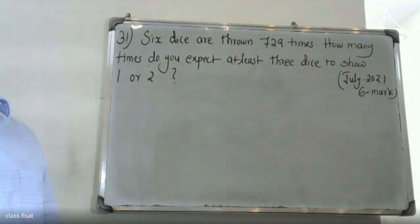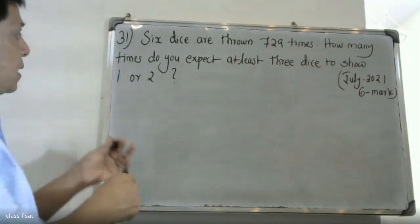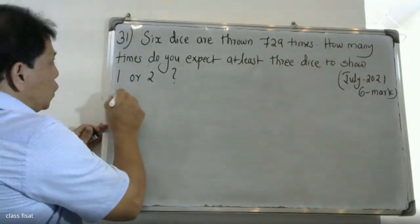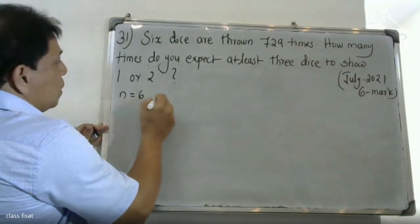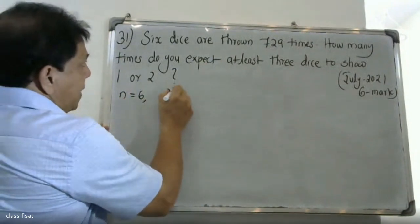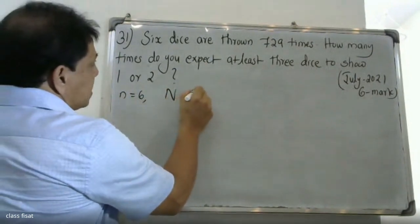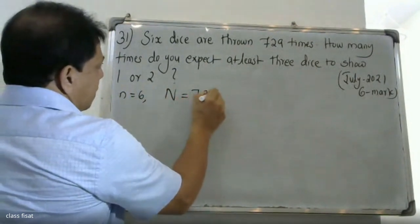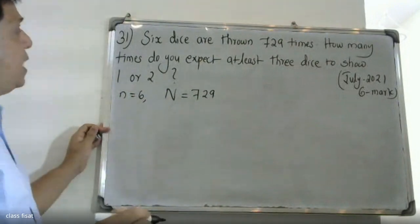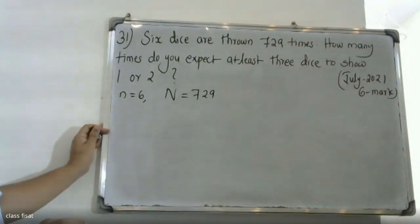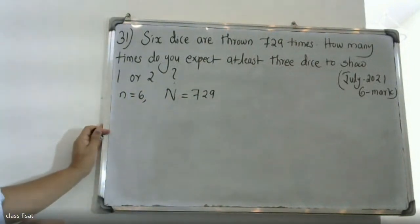How many times do we expect at least three dice to show one or two?